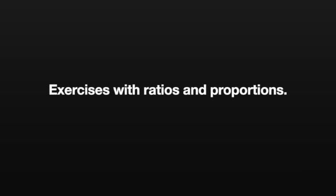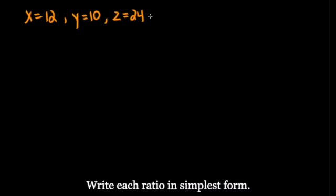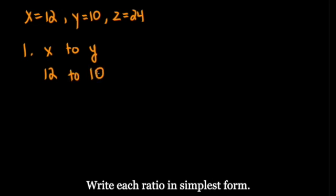Let's go ahead and try some exercises using ratios and proportions. We are told that x equals 12, y equals 10, and z equals 24, and we are told to write each ratio in its simplest form. For our first problem, it says x to y. So we would just plug in 12 for x and 10 for y, so our answer would be 12 to 10.